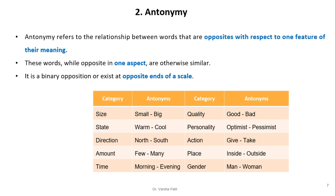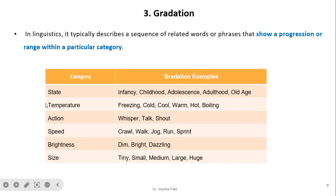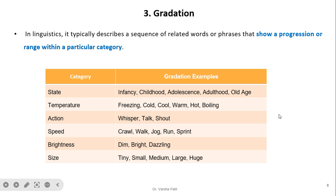Gradation in linguistics typically describes a sequence of related words or phrases that show a progression or range within a particular category. For example, in the category of action: whisper, talk, shout. For speed: crawl, walk, jog, run, sprint. These are the different examples for gradation.